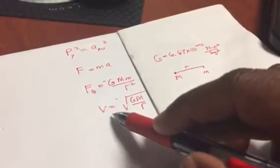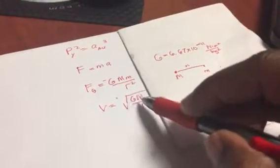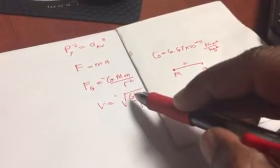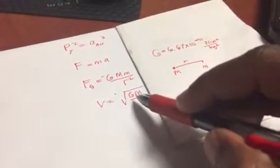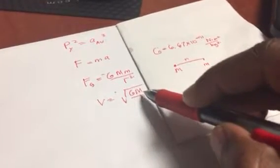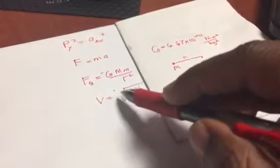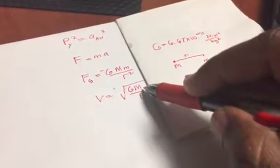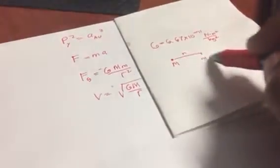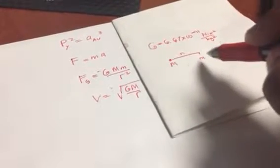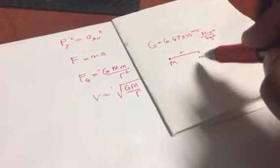This is going to be the square root of that constant—and again, this constant G is known as the universal gravitational constant—multiplied by the mass, not of the object whose speed you're trying to calculate, but the mass of whatever object that particular mass is orbiting. So let's imagine that m is orbiting big mass M. I want to get the speed of little m.